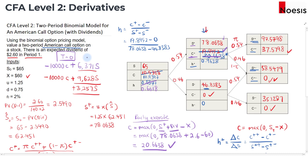That concludes the video, where we used the binomial option pricing model to value a two-period American call option on a stock. When there is a dividend, discount it to period zero to adjust the underlying price at time zero, then use that adjusted price to compute prices at periods one and two. Calculate the option payoff at expiration, compute the risk-neutral probability, discount back to period one, and compare the call option value versus the early exercise value. If early exercise value is greater, exercise early; otherwise, hold the option.